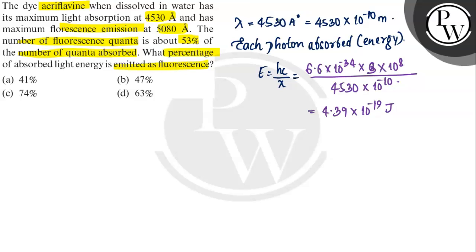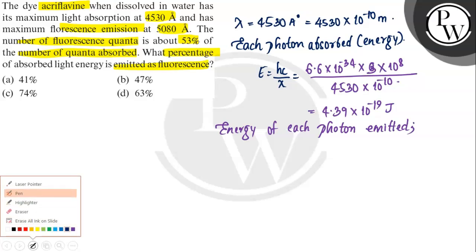Now we calculate the energy of each photon emitted. First we calculated the absorbed, and now we calculate the emitted using the same formula, that is E is equal to hc by lambda. Now this is emitted one, this is absorbed one, that is hc by lambda.